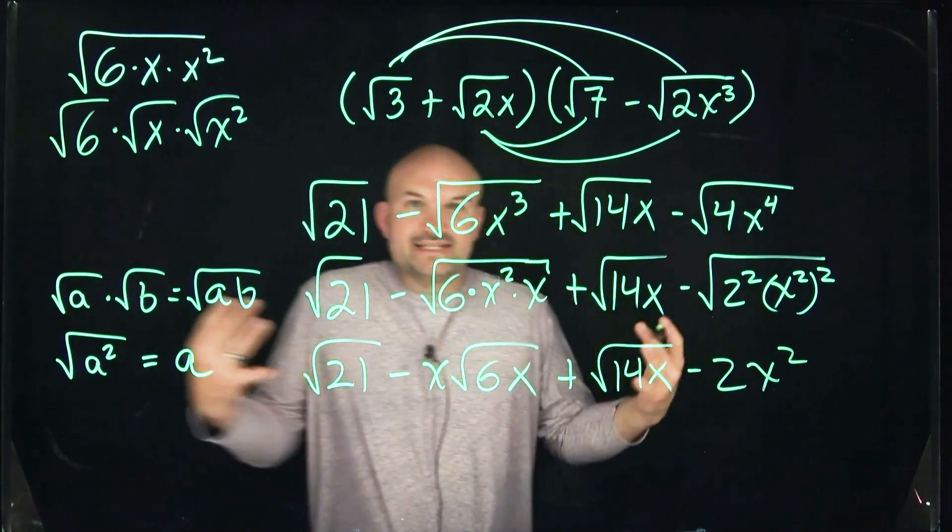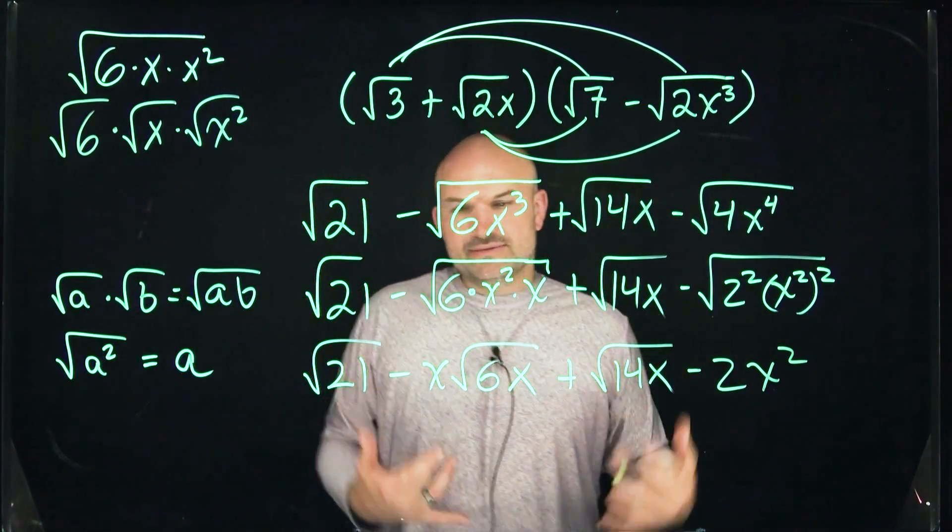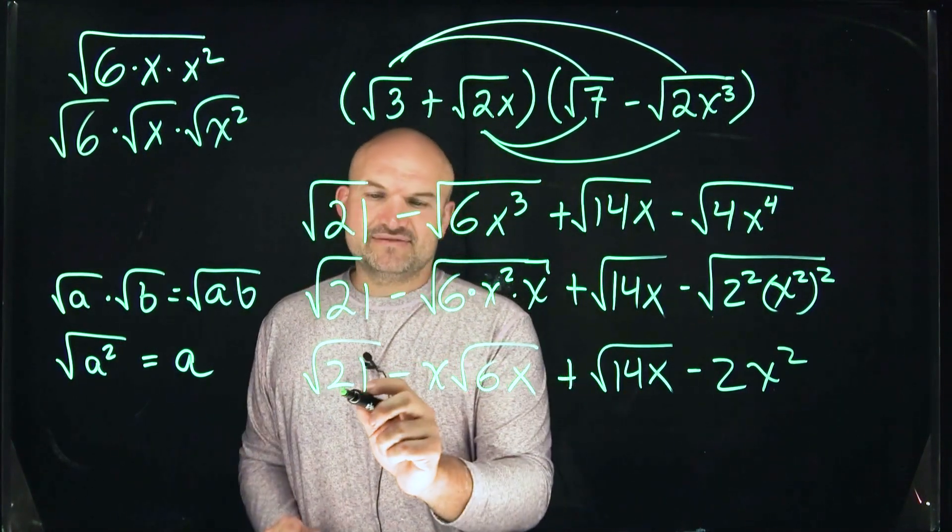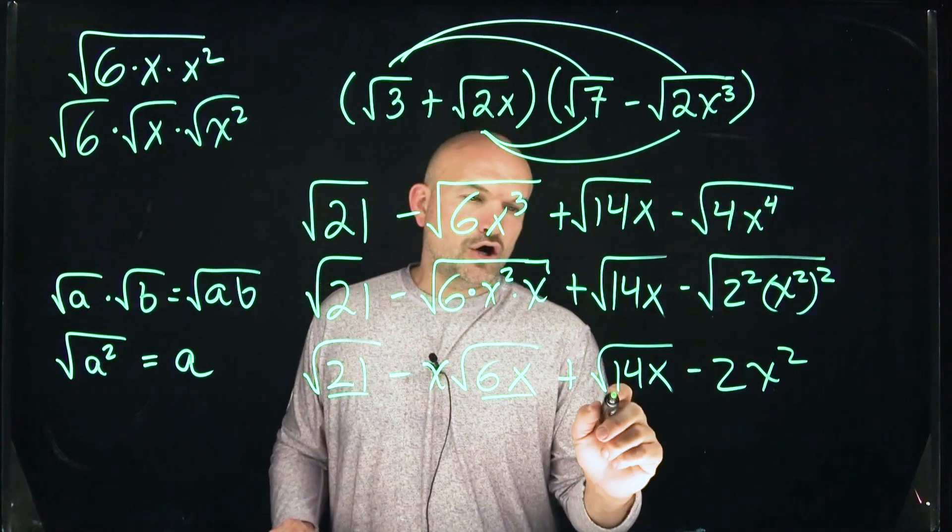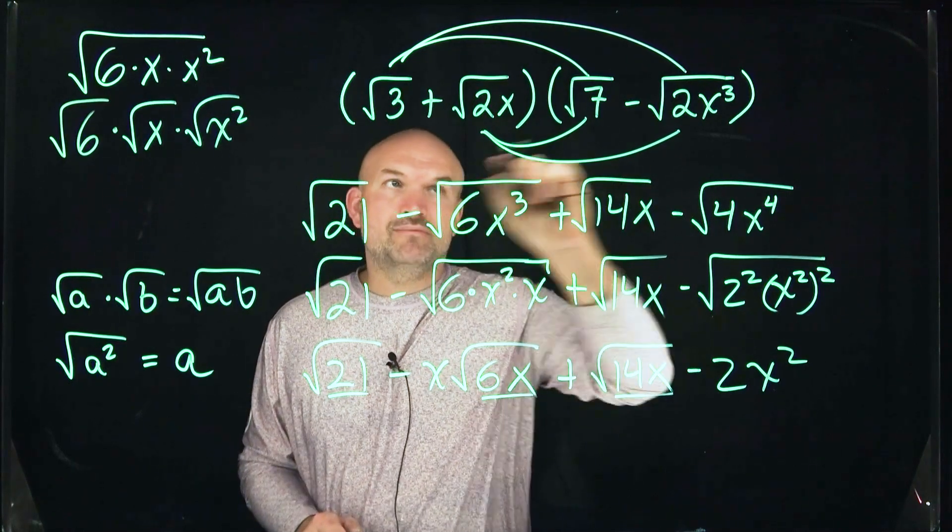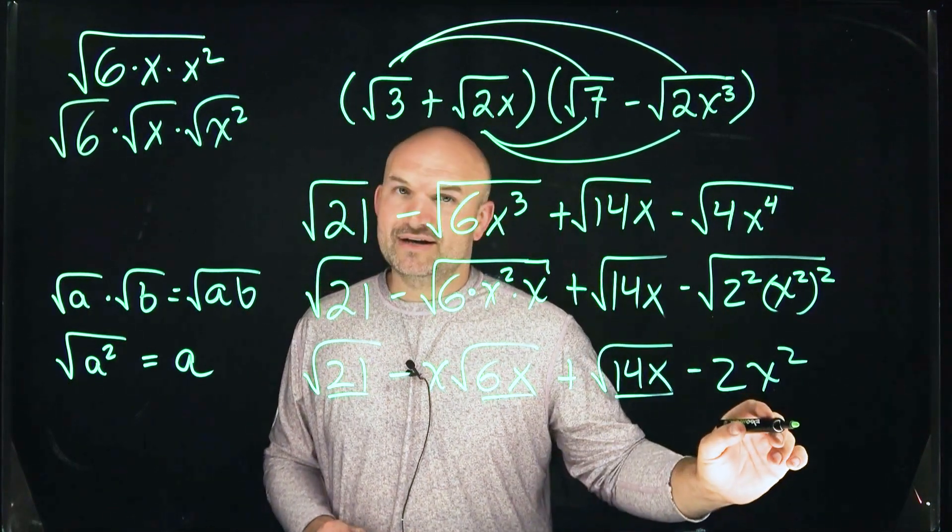Now, the last thing we want to do is be able to see, can we simplify any of these? And for us to be able to combine our radicals, they have to not only have the same index, but they also have the same radicand. And you can see these are all different radicands. So therefore, there's nothing we can go ahead and simplify. And that is how you multiply your two binomials with radicals.